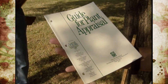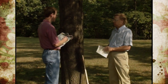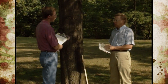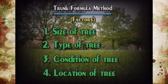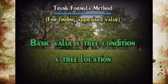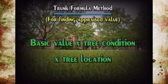Tell us the new formula — it just came out in August of this year and they've been working on it for several years. It's called the trunk formula method, and it takes into consideration several factors including the size of the tree, the type of tree, its condition, and where it's located in the landscape. So the basic formula, as I understand, to get the appraised value is: basic value times condition times location.